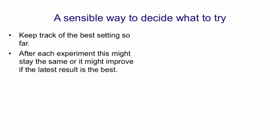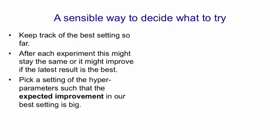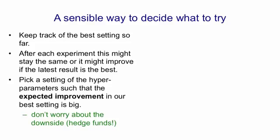When we run the next experiment, our best setting so far might be replaced because the new experiment gives better performance, or it might stay the same. Since we substitute the result of the new experiment only if it's better than anything we've seen so far, our best setting can only improve. So here's a good strategy: we pick a setting of the hyperparameters such that the expected improvement in our best result is big. We don't worry about experiments that lead to really bad results, because if it gets a bad result, we won't replace our best — and we'll still learn something.